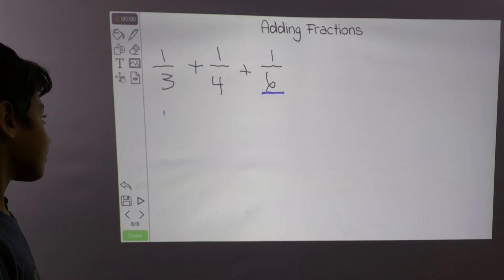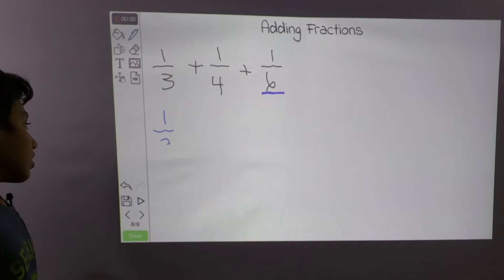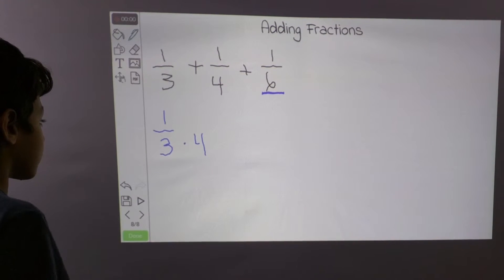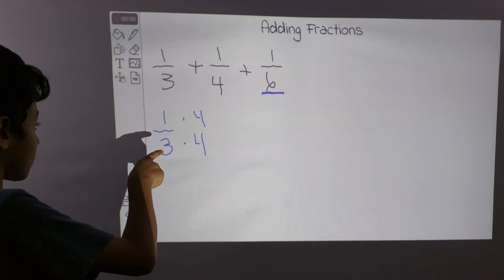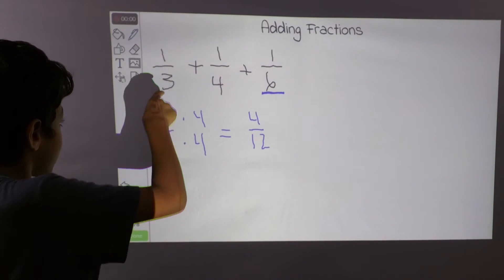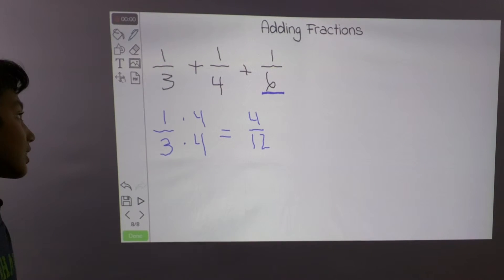So let's start with 1 third. So 1 third, so 3 times 4 is 12. So remember, what we do to the bottom, we must do to the top. So we have 4 over 12 for this one, and then let's do 1 fourth.